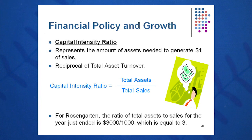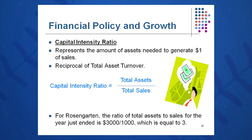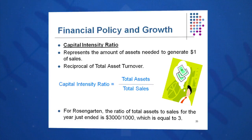The capital intensity ratio is the inverse of the total asset turnover ratio — how many dollars of assets are required per dollar of sales. For Rosengarten, we had $3,000 in total assets and $1,000 in total sales last year, so they had a three-to-one capital intensity ratio. Let's compare that to Huffman Company. Remember, Rosengarten was three-to-one; each company will vary.